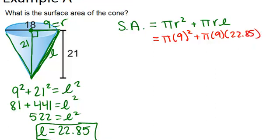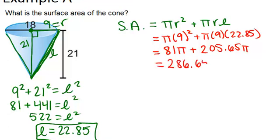In order to do that, don't worry about the pi for a moment. Just simplify 9 squared to get 81, and then you have 81 pi. And then do 9 times 22.85 to get 205.65, and then have pi at the end. Then combine those two together, and you get your total surface area is 286.65 pi units squared.